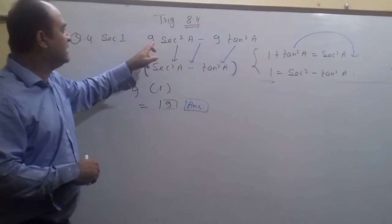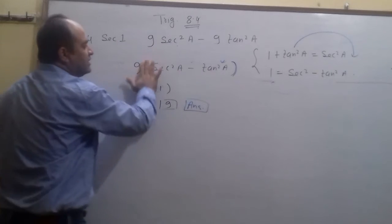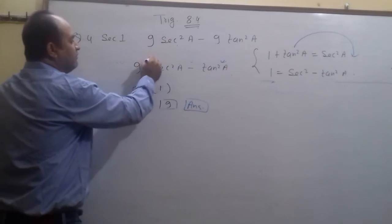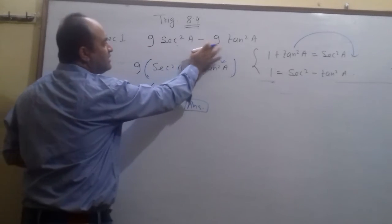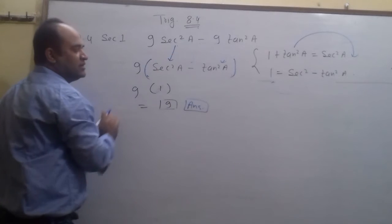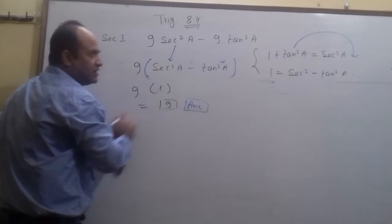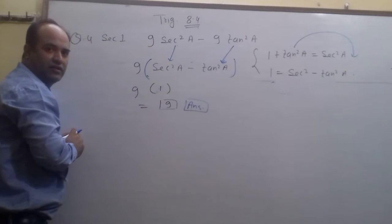Look at this. What have I done? I got 9 common. I got this term in this term. I have put it in this term. If you have sec²a minus tan²a, minus sign as such, then tan²a. Nine cut because 9 is common.